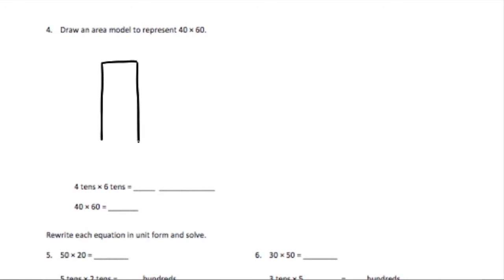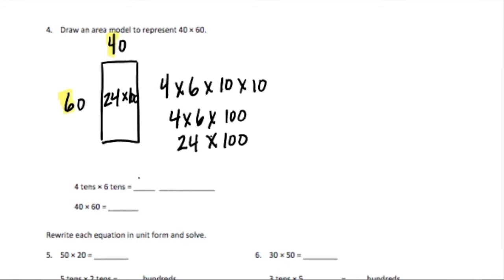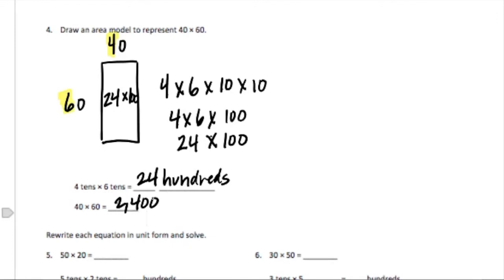For number four we're going to do an area model for forty times sixty. That would be forty, or four tens, times sixty, or six tens. This is the longer side, so this is more of the six and this is more of the four. That would be six times four, which is twenty-four, times one hundred, because each of these spaces is one hundred. Four times six times ten times ten equals twenty-four hundreds, or two thousand four hundred in standard form.